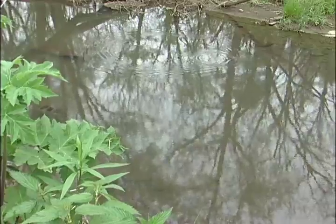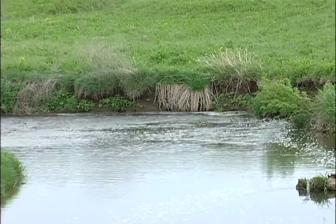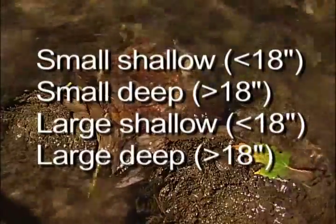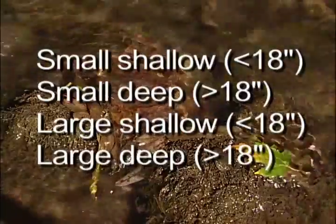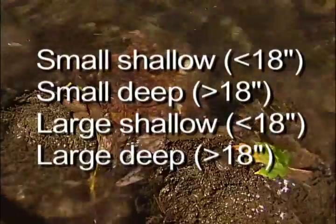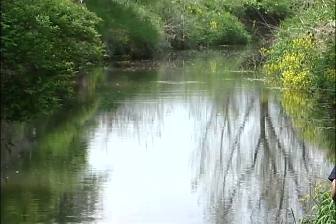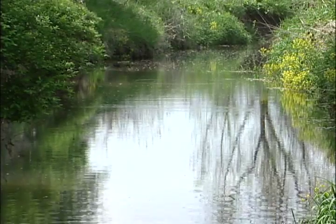The next habitat parameter for soft bottomed streams is pool variability. Pools are generally slower-moving and deeper water areas compared to riffle habitat. We look for the amount of different types of pools within your 300-meter site using a size-depth classification: small and shallow, small and deep, large and shallow, or large and deep. If your site has a combination of all four pool types, it receives the highest score, whereas sites with very few pools, such as the one behind me, receive the lowest score.